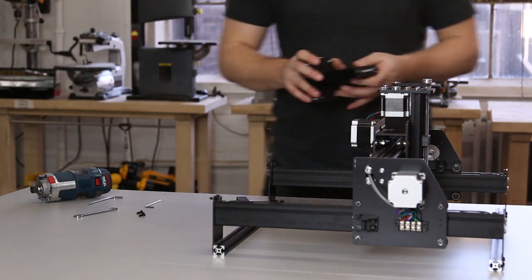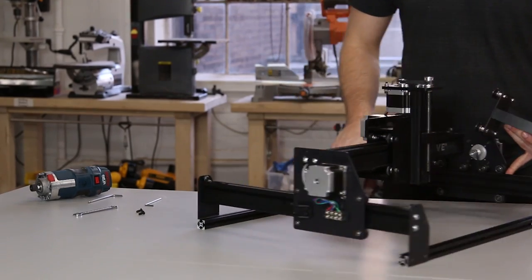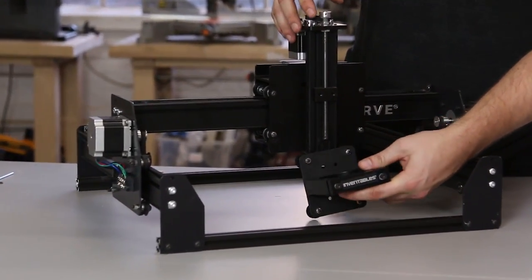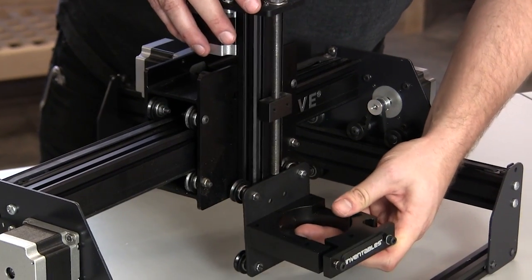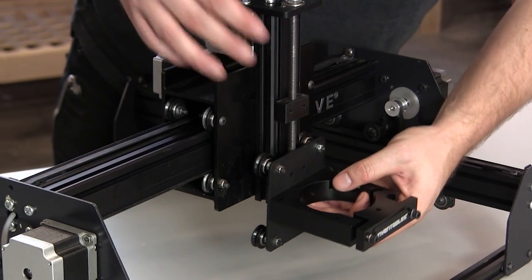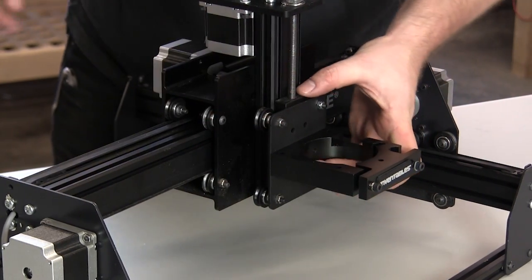Slide the Bosch Colt out and put the spindle mount onto the Z-axis maker slide. If you're having trouble, make sure that your eccentric nuts are oriented out.